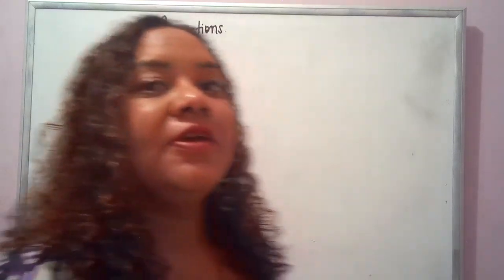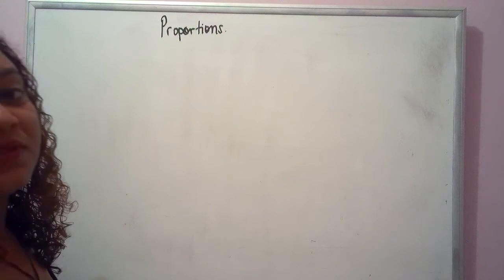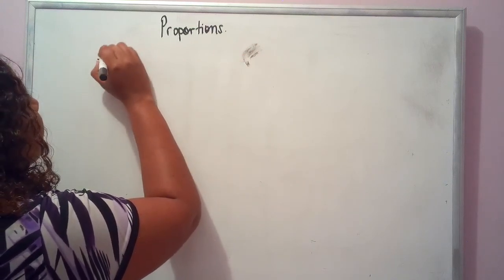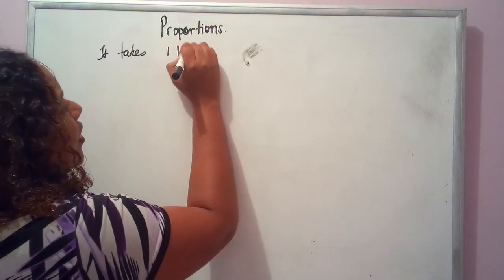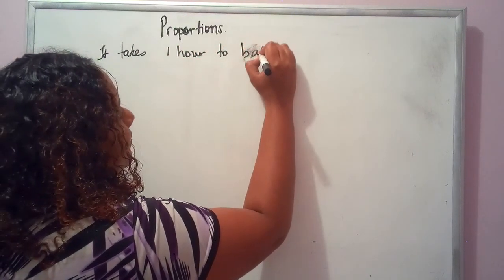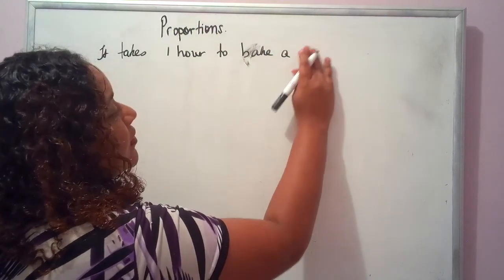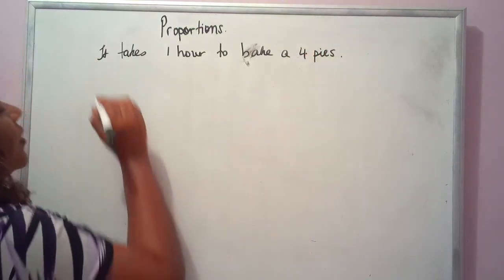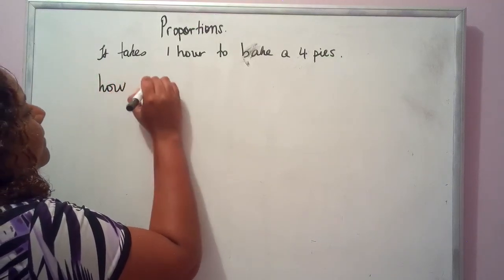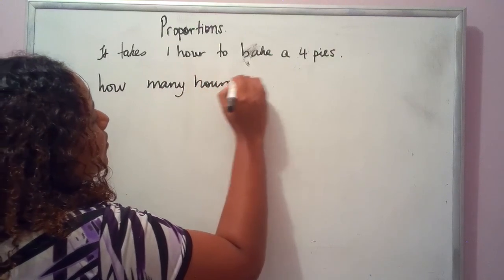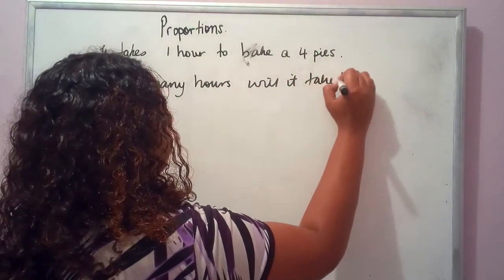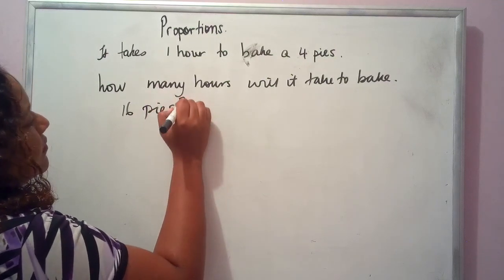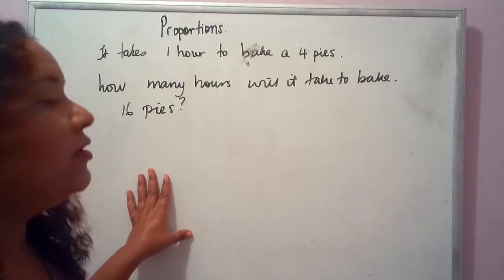We want to balance the proportions. I want to illustrate with an example. Suppose it takes one hour to bake four pies. How many hours will it take to bake 16 pies? This is a simple example of proportion.